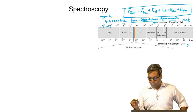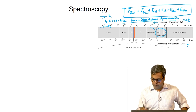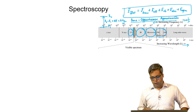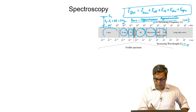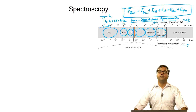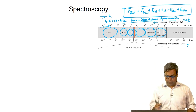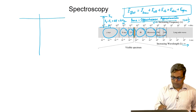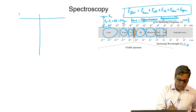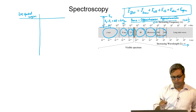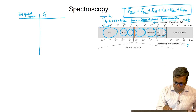We have different regions: radio waves, then microwave, then IR, then visible, then ultraviolet or UV, then X-rays, and finally gamma rays. In general, we have different spectroscopies for different regions of the electromagnetic spectrum. Let us make a table with two columns: one for the electromagnetic spectral region, and the other for the spectroscopy associated with that region.